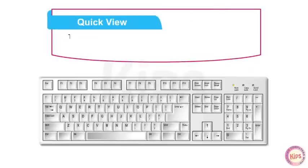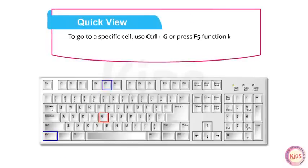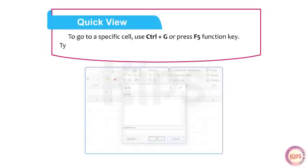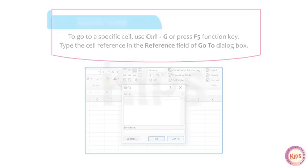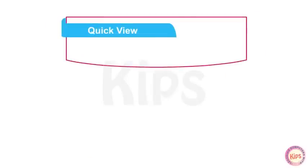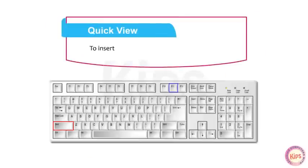Here is an interesting fact. To go to a specific cell, use Ctrl+G or press the F5 function key. Type the cell reference in the reference field in the Go To dialog box. Also note that to insert a new worksheet, press Shift+F11.